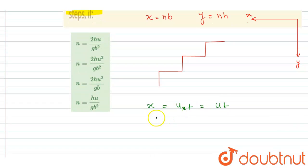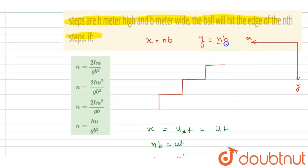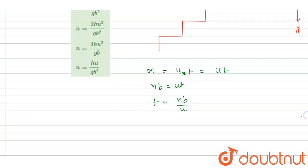And x here is nb, so I will write nb equals ut, and t equals nb by u. Now in the same time, the ball travels this much vertical distance. There is no initial velocity in vertical direction, so we can directly write down the displacement in y direction. Let's say it is y and it